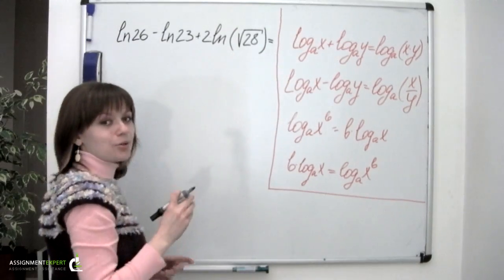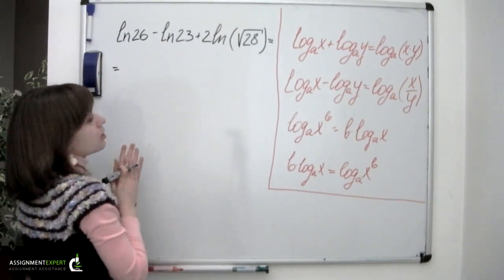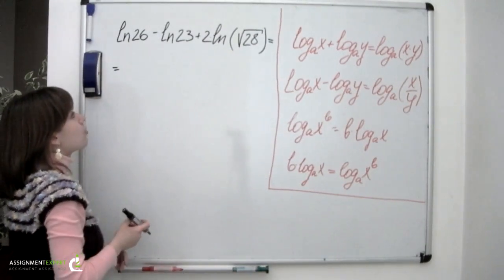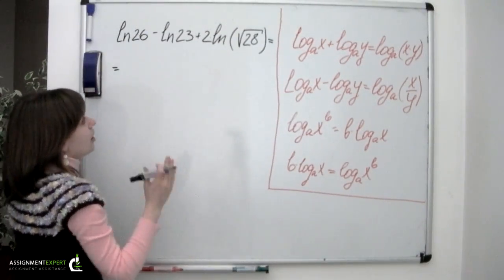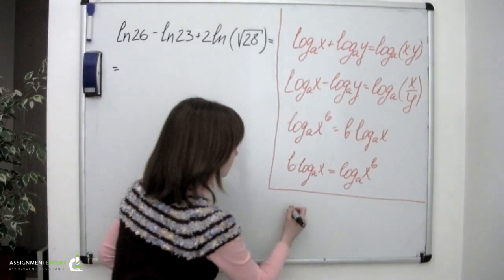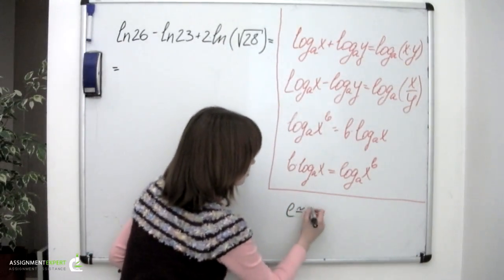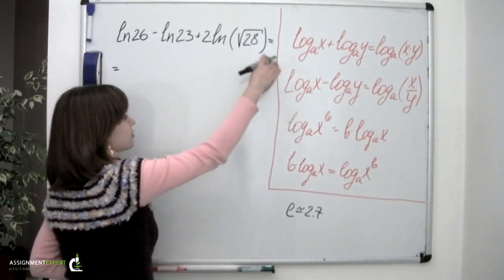Now let's get to our problem. The first thing we can notice is that we have natural logarithms which says that these three logarithms have the same base e which is approximately equal to 2.7. So we can apply these formulas.